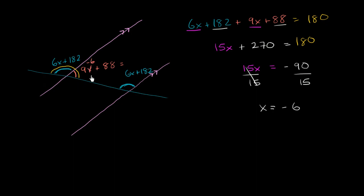times negative 6 plus 88. 9 times negative 6 is negative 54. Negative 54 plus 88,